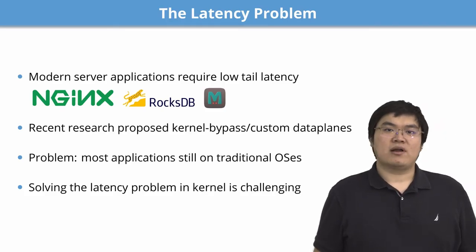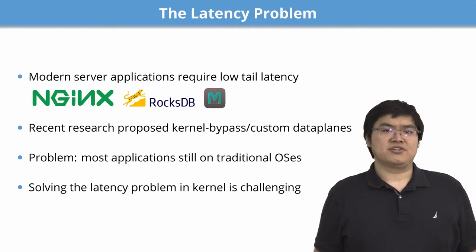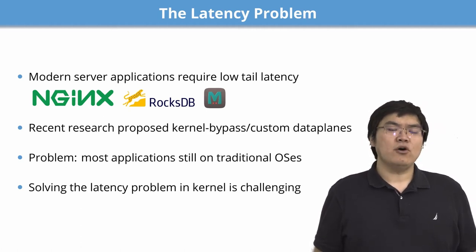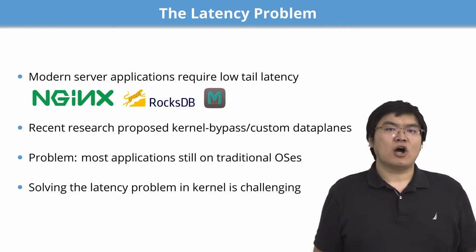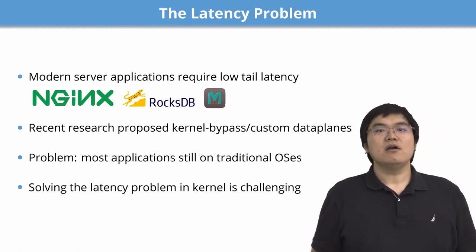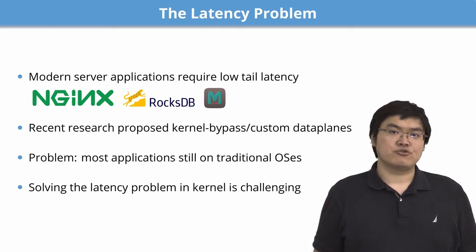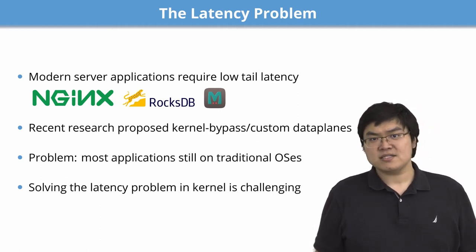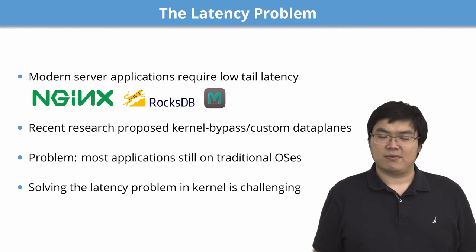Applications and hardware have evolved tremendously. Modern server applications span hundreds to thousands of nodes to service user requests. Users experience request latency dominated by the tail latency of any node in the request service tree. Recent research systems such as Shenango and Shinjuku propose using kernel bypasses and custom data planes to solve the latency problem.